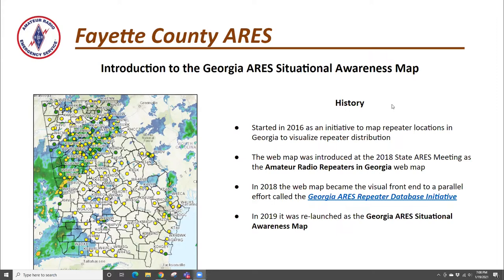I'd spent some time supporting the National Weather Service in Peachtree City, and the lead forecaster Lance Rothfuss always referred to the 'Silent Crescent' — a swath of terrain running diagonally from northeast to southwest across Georgia where it was almost impossible to get anybody's attention during heavy weather. You couldn't get into these places with linked repeaters; we often had to rely on HF or just phone calls.